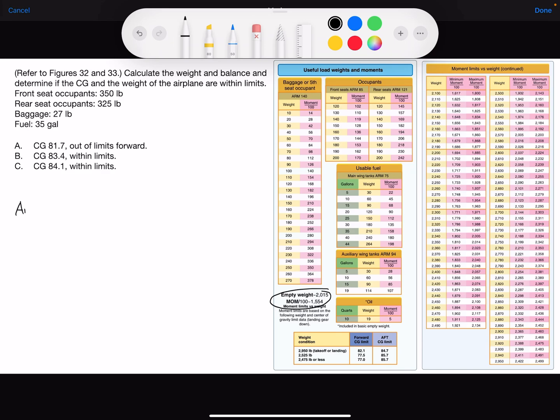So we have the airplane's empty weight, 2,015 pounds. Weight, arm, moment.